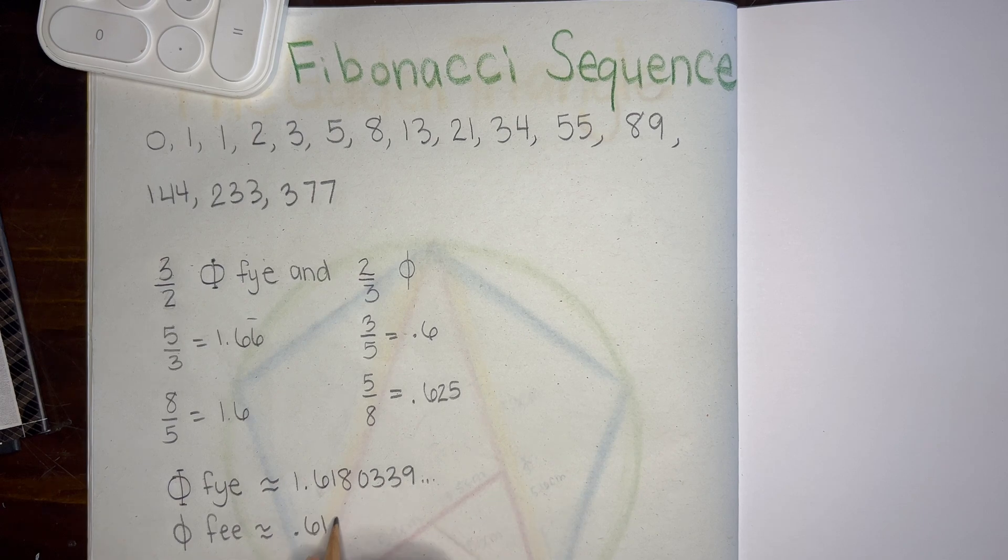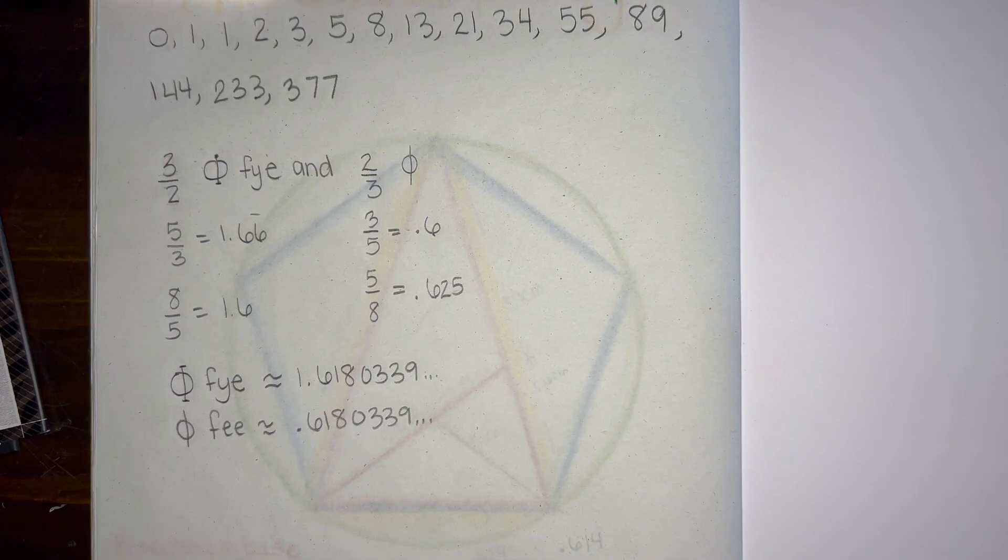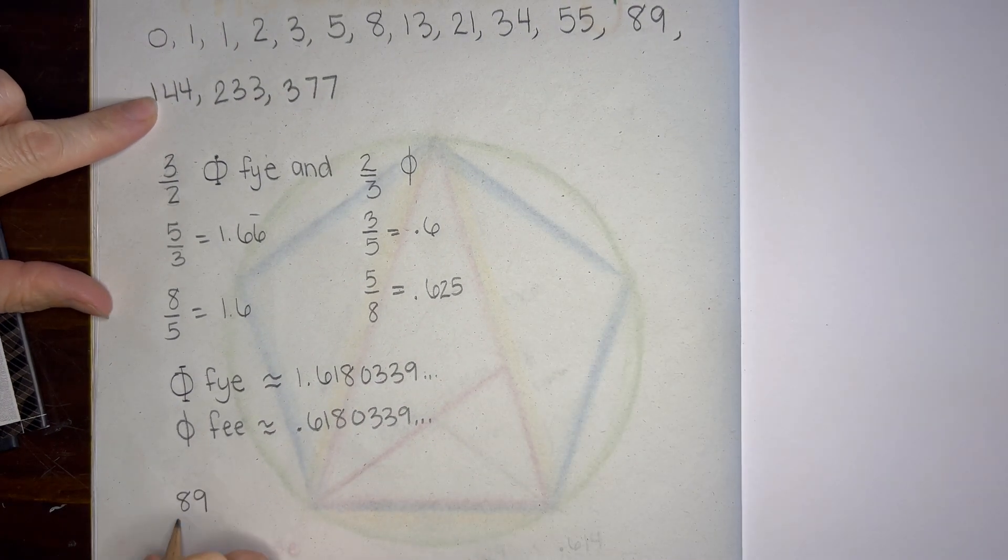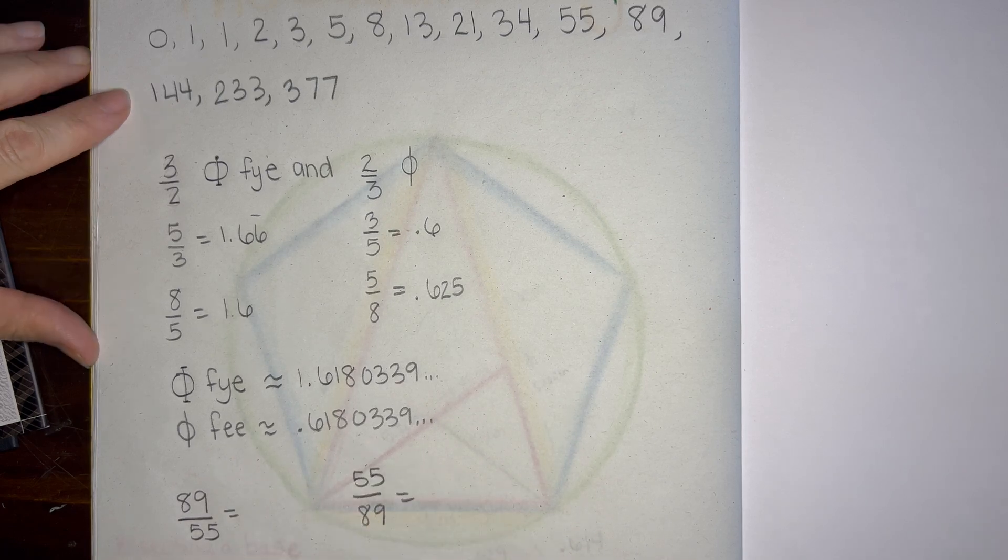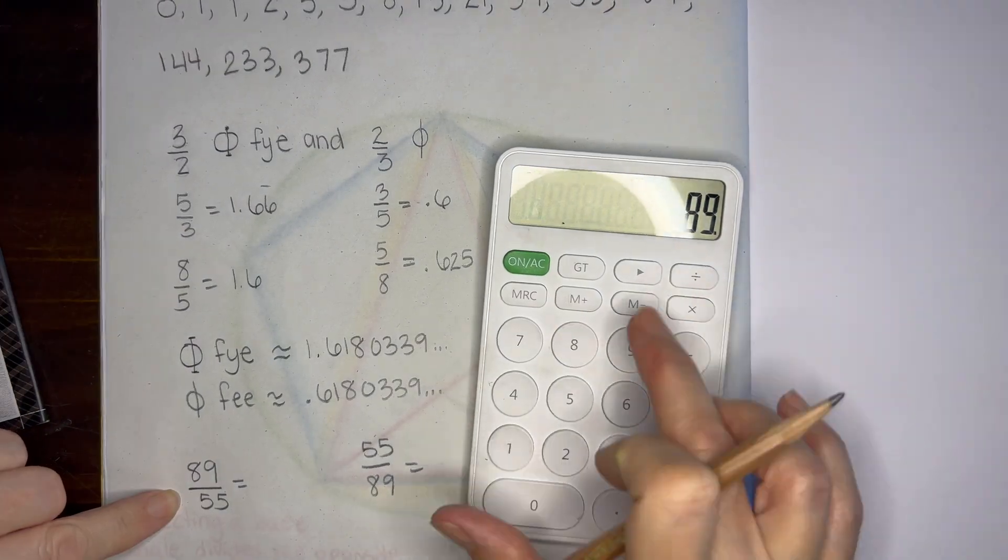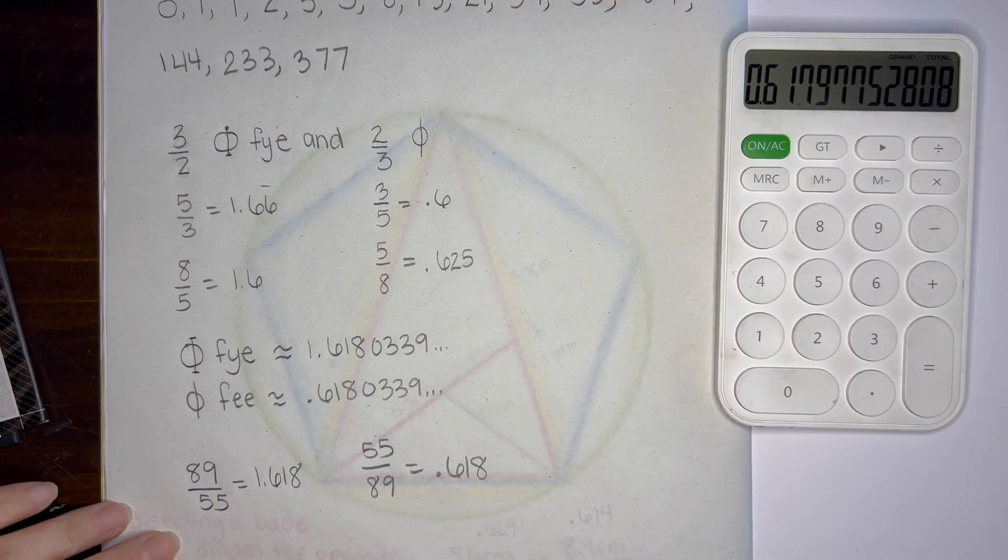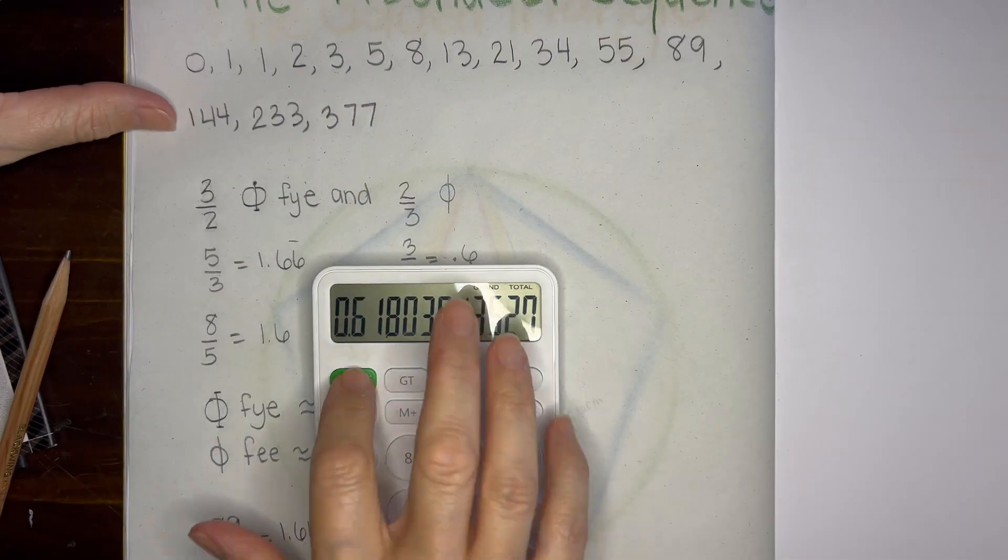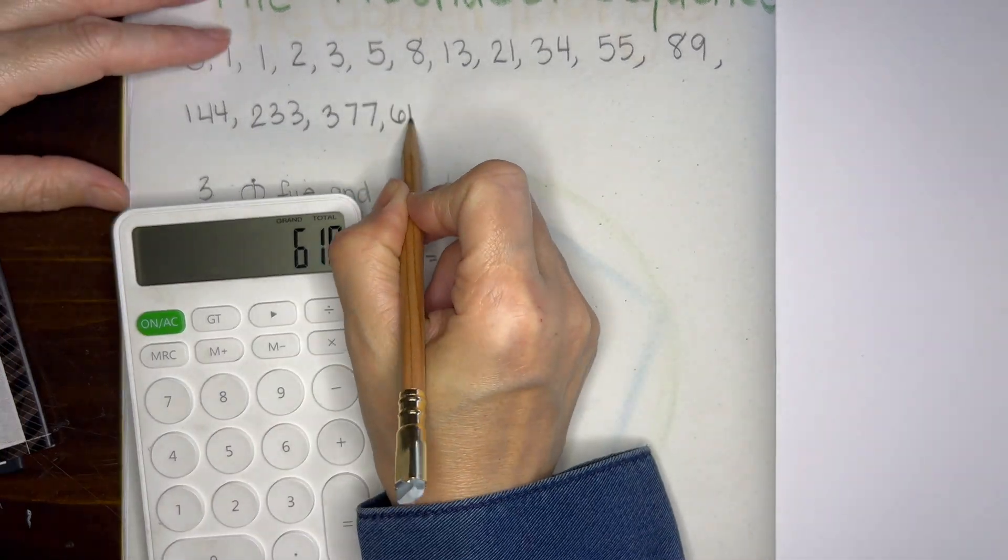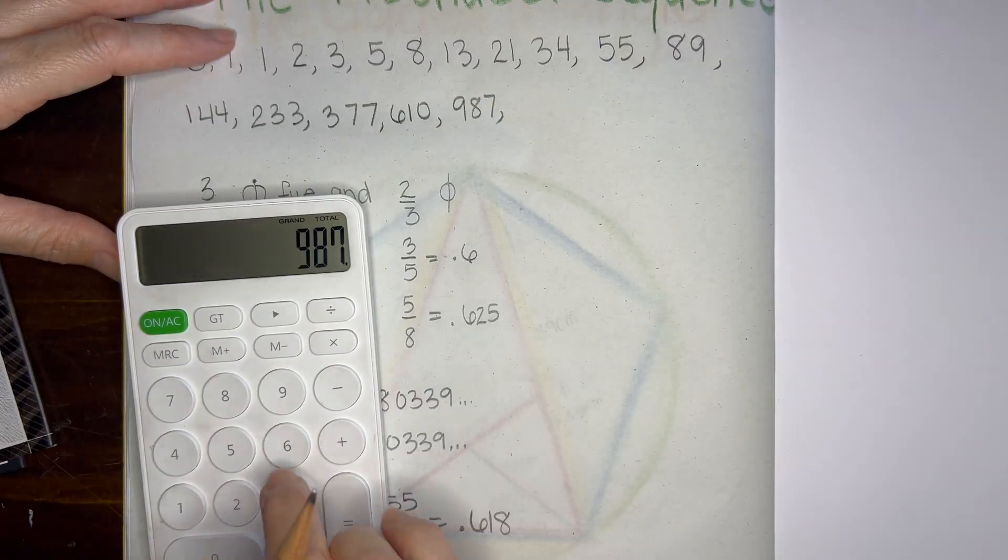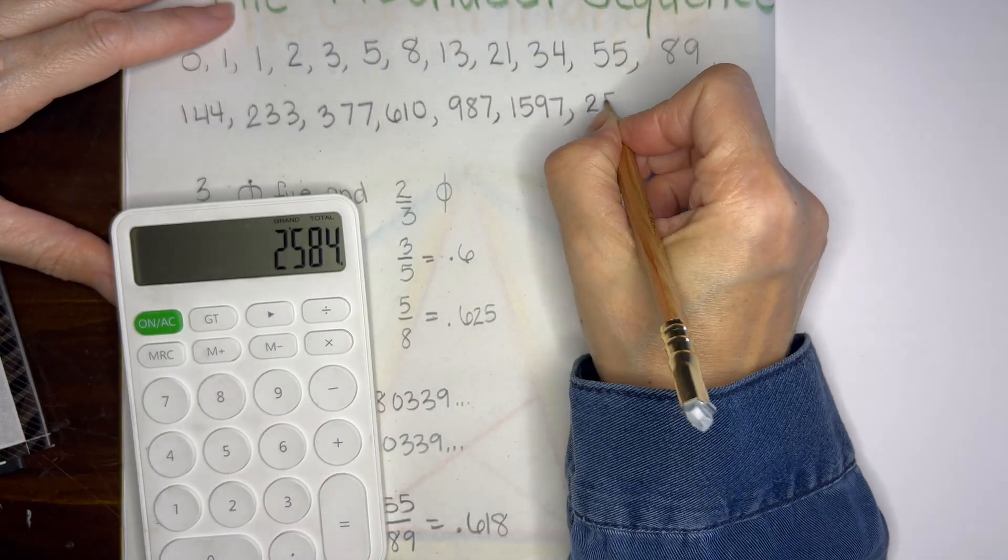Phi is 1.6180339 and then it keeps going. And phi, the lesser, is 0.6180339 and then it continues. So the numbers are the same in the sense that beyond the decimal point they're the same. And then, of course, there's a 1 for the greater and not a 1 for the lesser.